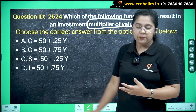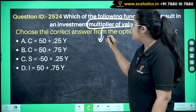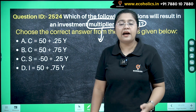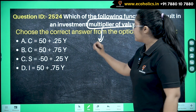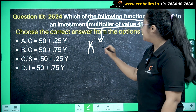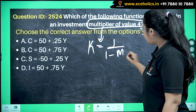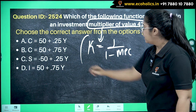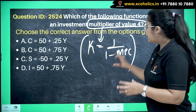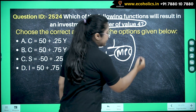Just to tell you about the concept of multiplier: the investment multiplier concept was given by John Maynard Keynes. The multiplier is represented by the symbol k, which is equal to 1 upon 1 minus MPC. This is the formula for the multiplier, where the most important part is MPC —